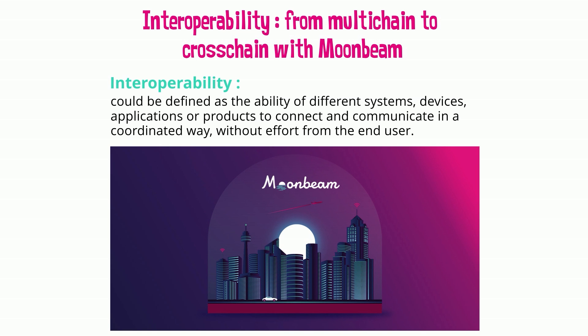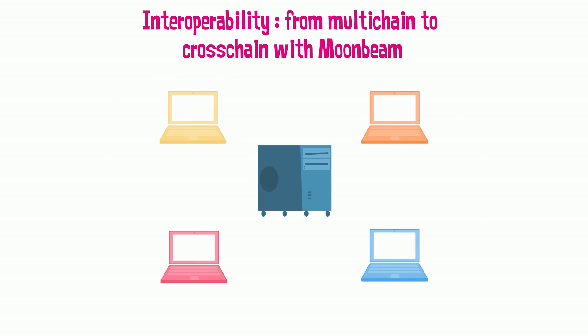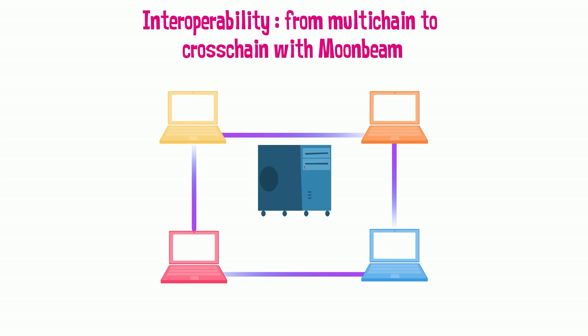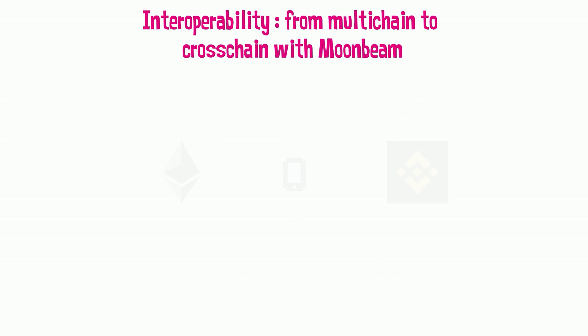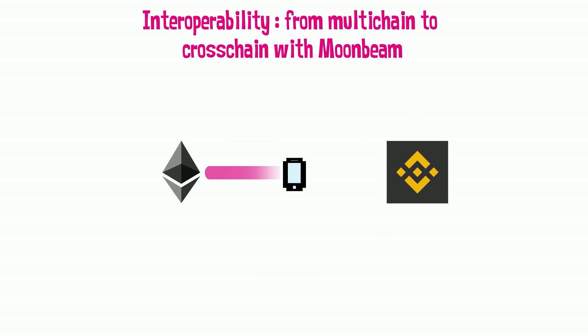Interoperability could be defined as the ability of different systems, devices, applications, or products to connect and communicate in a coordinated way without effort from the end user. In other words, interoperability is about how much systems — here blockchains — can communicate together and how an app working on Ethereum can interact with the resources available on Binance Smart Chain.